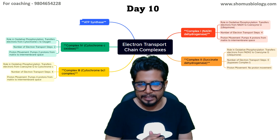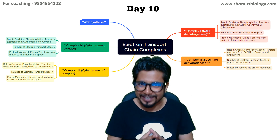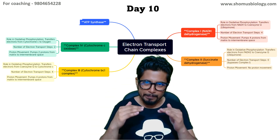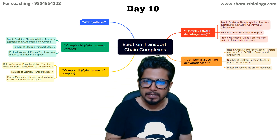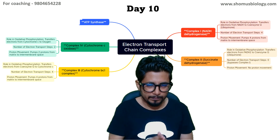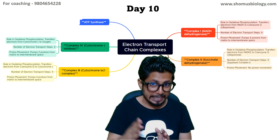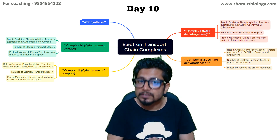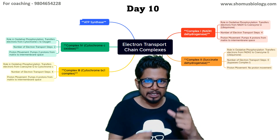Once all the protons are pumped into the intermembrane space, a large proton gradient is created between the intermembrane space and the matrix. The proton count is: four in Complex I, zero in Complex II, four in Complex III — totaling eight — and two in Complex IV, giving a grand total of ten protons pumped per journey of one NADH and one FADH2.